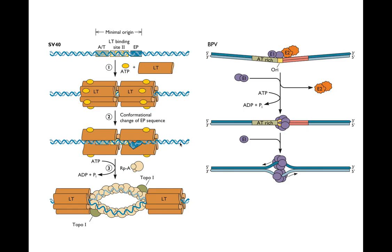Let's review how these origin binding proteins work. On the left is the SV40 origin of replication, which binds two hexamers of large T. These induce conformational changes in the origin that allow RPA to come in, along with topoisomerase, causing the denaturation of the double-stranded DNA and making two single strands so that replication can subsequently occur. So it's an origin binding protein that participates in denaturation by helping to recruit RPA and topo-1.